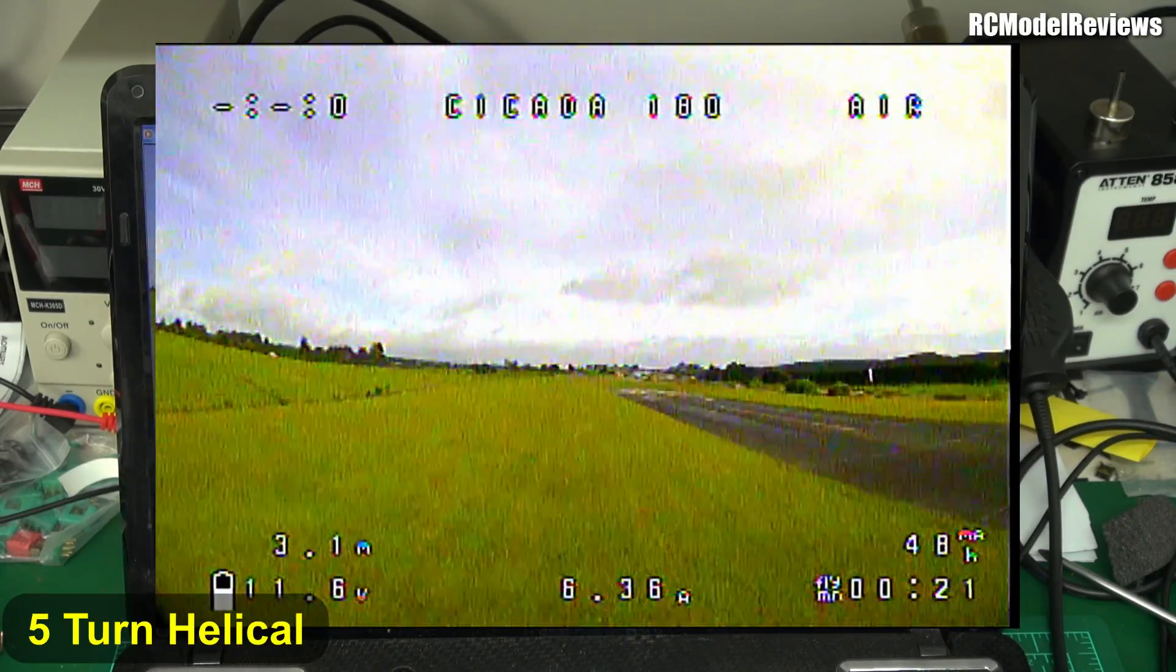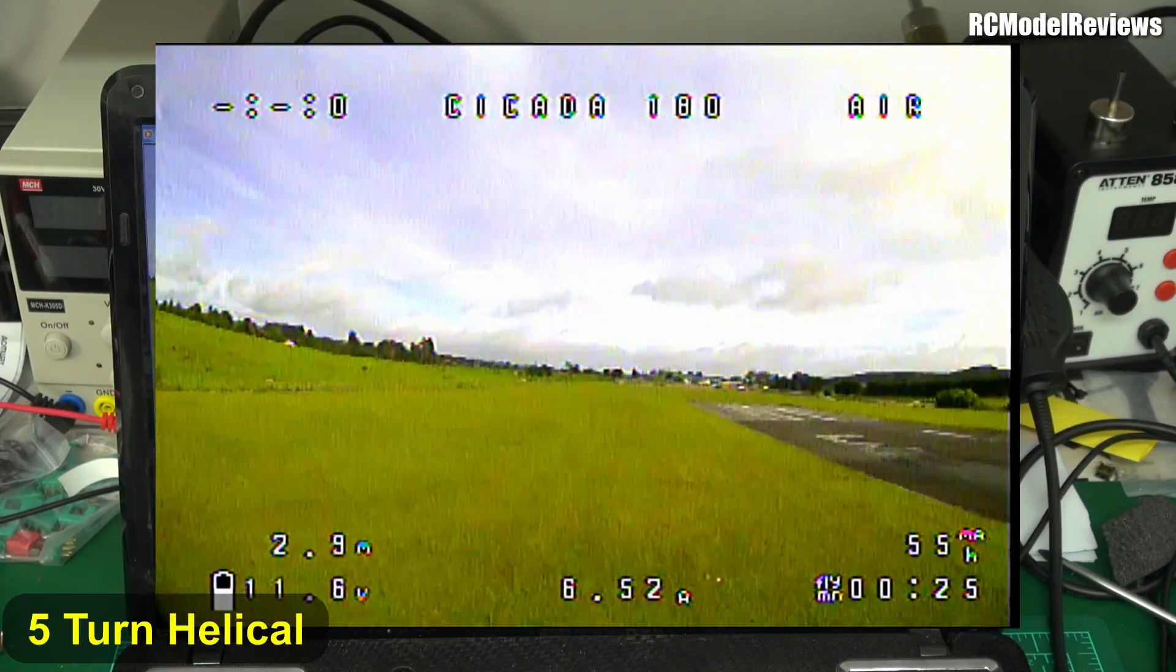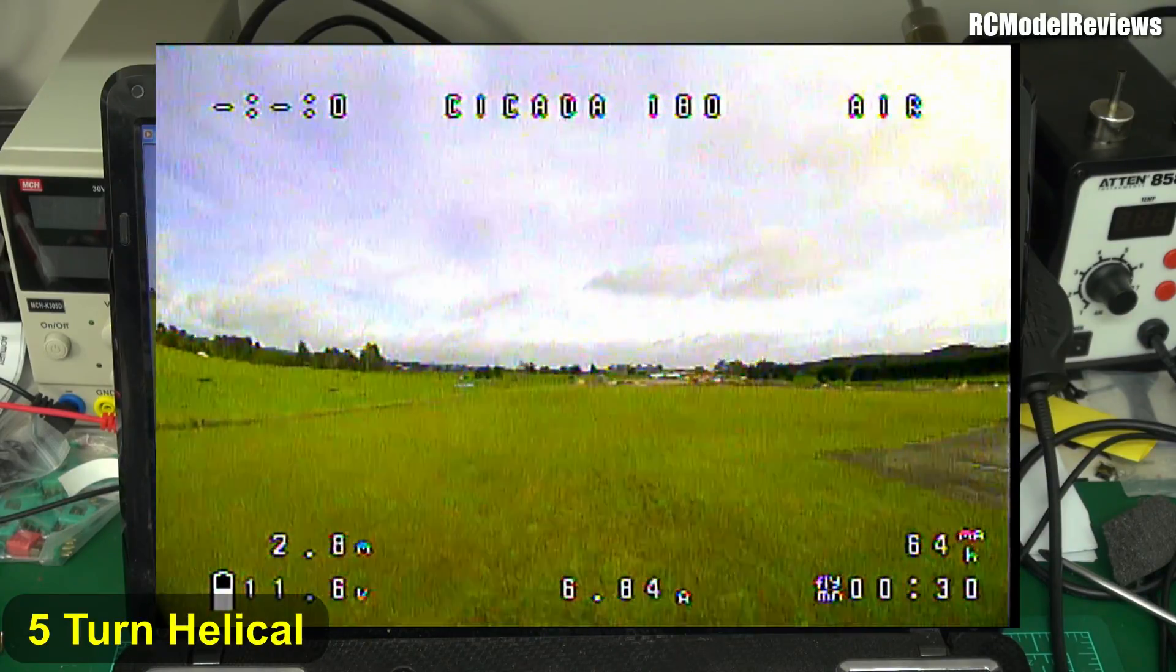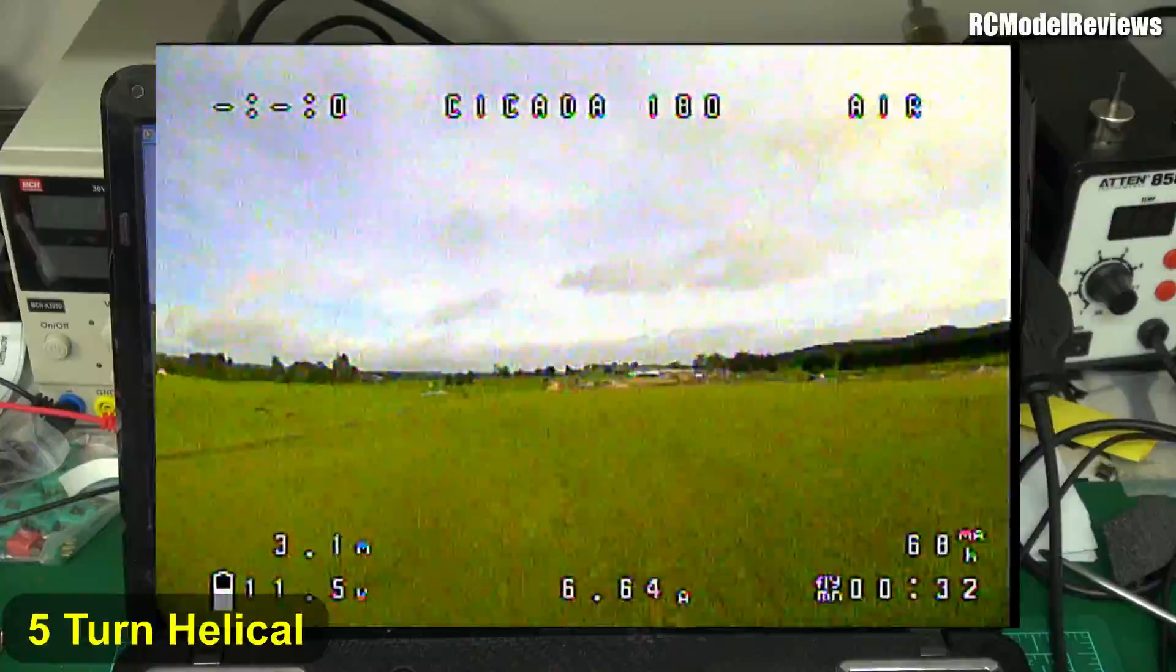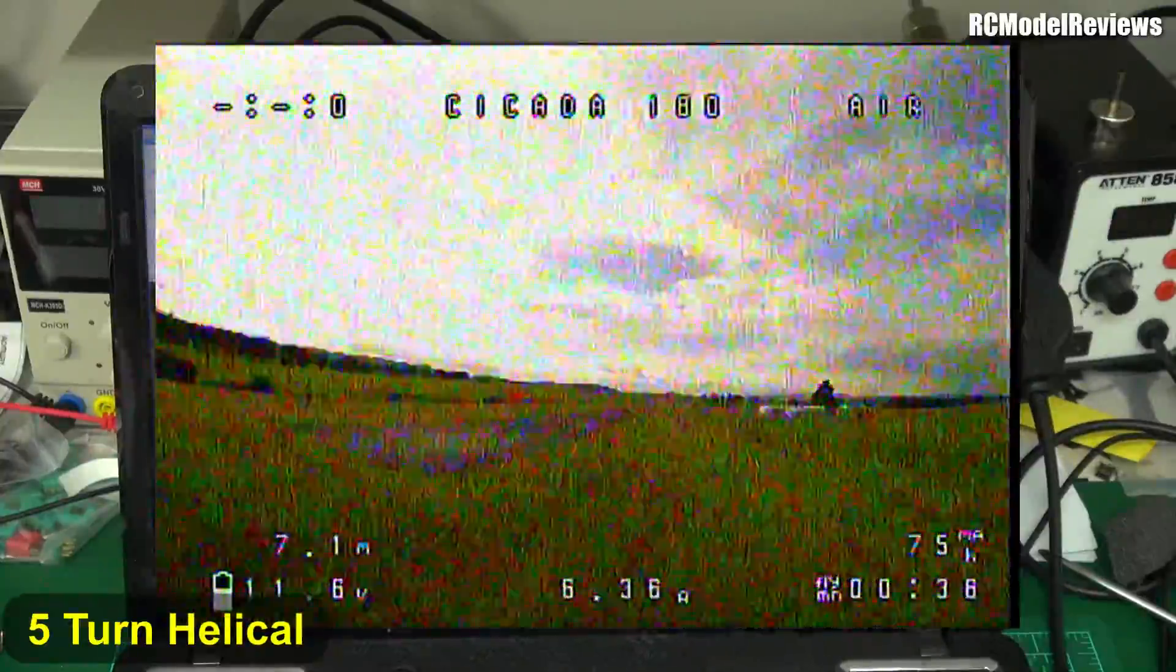Probably 300 meters coming up and here we go, you see a bit of grain in the picture there but it's still totally flyable. Here we go out past 400 meter mark with only 25 milliwatts of power. As we turn we should get a bit of grain in the turn because the antenna changes a little bit on the quad.